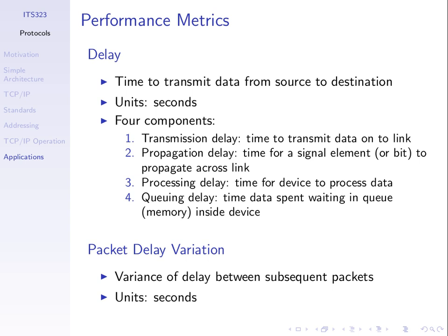Computers communicating via a link need to do some processing before sending and after receiving data — protocols may require processing, or an intermediate device receives and forwards the signal. Processing delay is the time for the computing device to process the data — at the source computer, destination computer, and any intermediate computers.